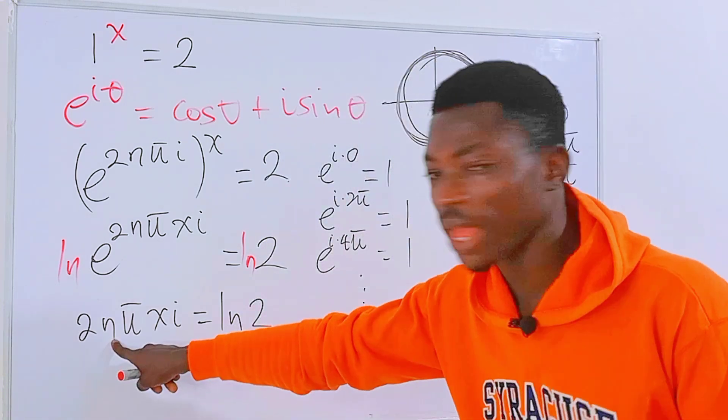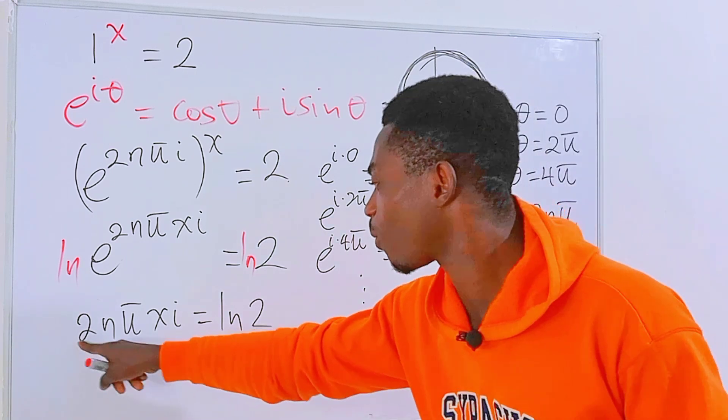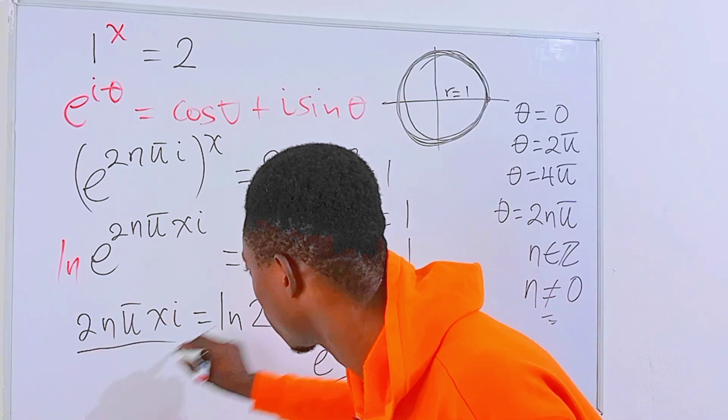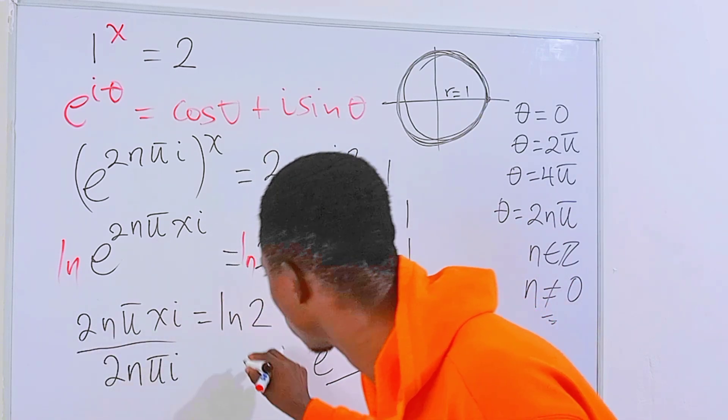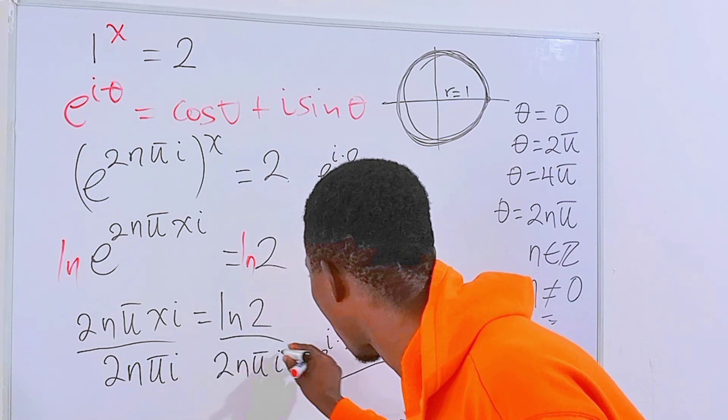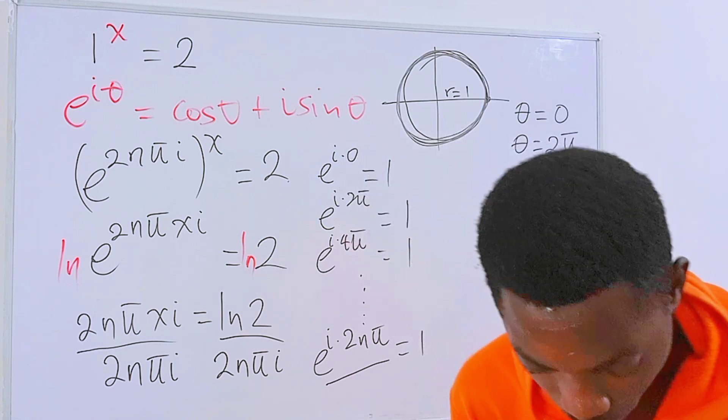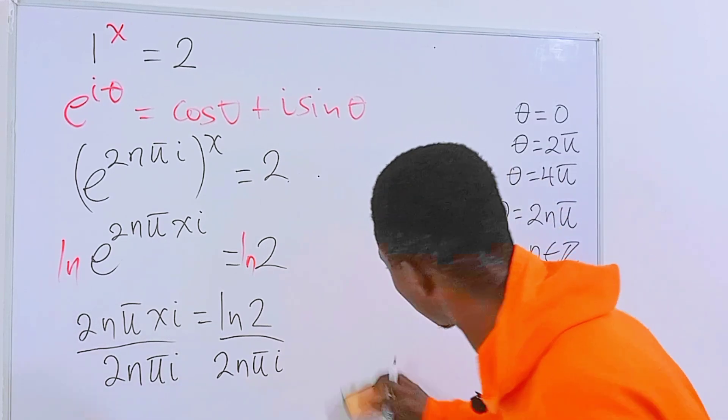Because from here n is never equal to 0, we can divide by the whole of this. So we have 2nπi. Now let me get rid of what is here and proceed from there.